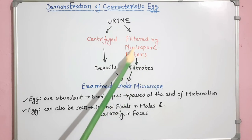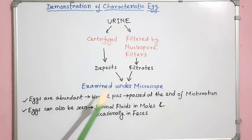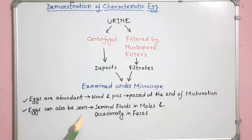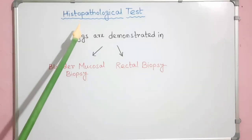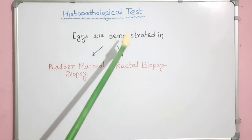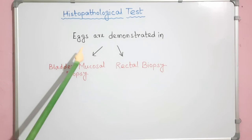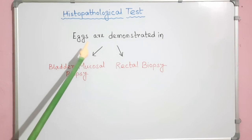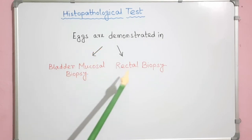The nucleopore filtration method provides quantitative data on the intensity of infection. Eggs can also be seen in the seminal fluid in males and occasionally in feces. Cystosoma infection may also be diagnosed by demonstrating its eggs in bladder mucosal biopsy and rectal biopsy — this is the histopathological test.